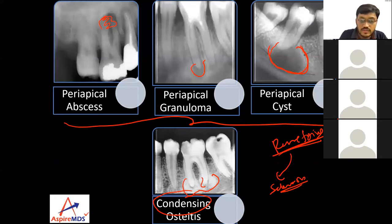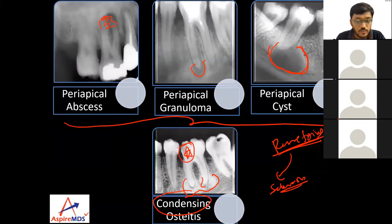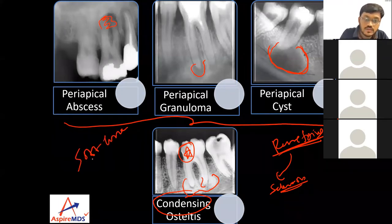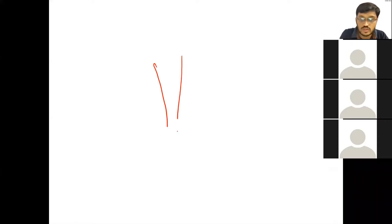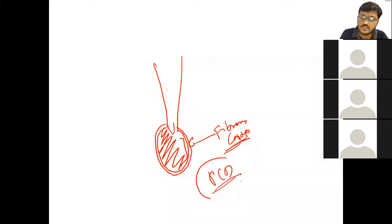An important differentiating feature is the fibrous capsule: a fibrous capsule or soft tissue capsule will be present surrounding the periapical cemental dysplasia lesion, appearing as a radiolucent lining around it, but this will not be present for condensing osteitis. This fibrous capsule is present for most fibrous lesions, and for PCD it will also be present.